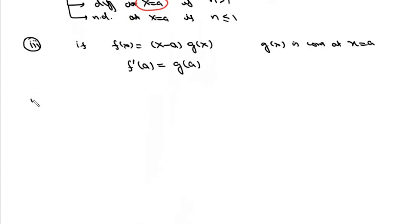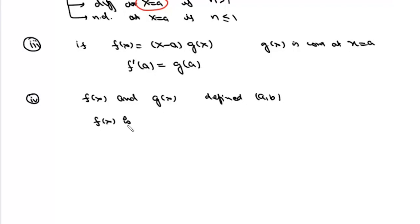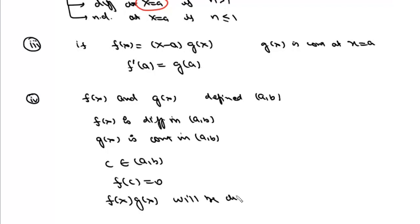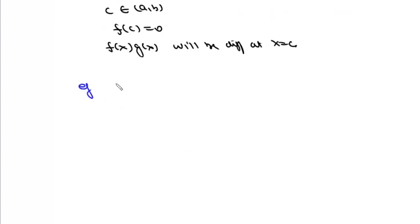Another result: suppose we have two functions f(x) and g(x) defined on the interval [a, b] such that f(x) is differentiable in this interval, f(c) = 0 for some point c in (a, b), and g(x) is continuous in [a, b]. Then the product f(x) · g(x) will be differentiable at x = c.